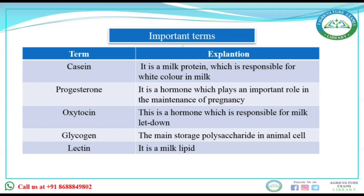Next is oxytocin. This is the hormone responsible for milk letdown. When milk is collected, that is due to stimulation by oxytocin. Then glycogen — in animal cells, these are polysaccharides stored in animal cells. Lectin is simply a milk lipid. So the answer is oxytocin.